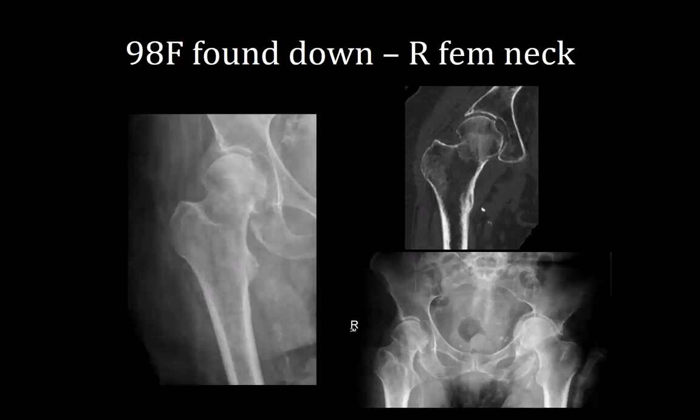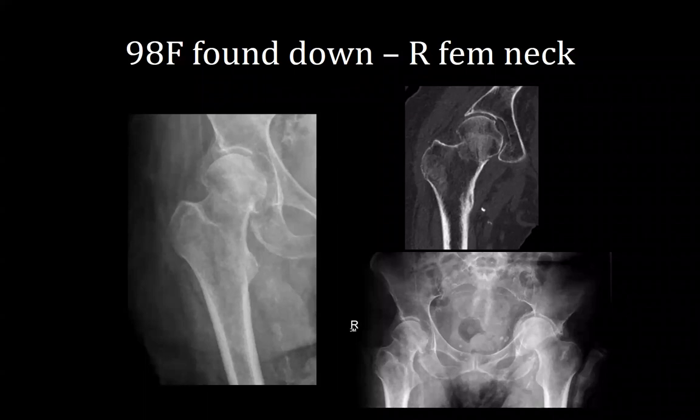The next patient is a 98-year-old female found down at her nursing facility with a history of dementia, non-ambulatory and wheelchair bound, and CKD. She was found to have a right valgus impacted femoral neck fracture. After a lengthy family discussion, we opted for non-surgical management with pain control and DVT prophylaxis.